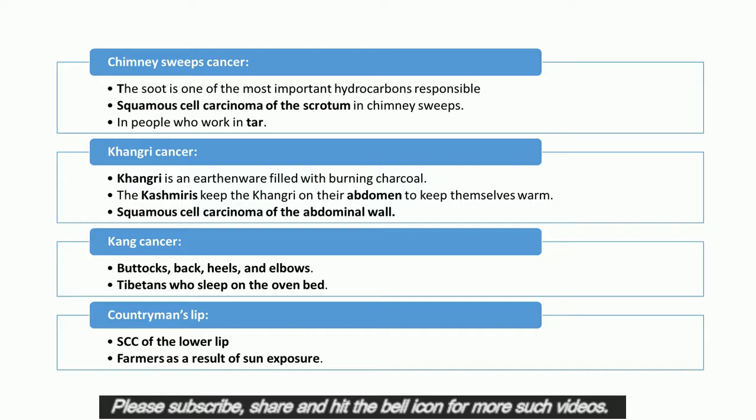Kang cancer: this is a Squamous Cell Carcinoma developing in the buttocks, back, heels, and elbows, seen in Tibetans who sleep on the oven bed. Countryman's lip: this is SCC of the lower lip seen in farmers as a result of sun exposure.